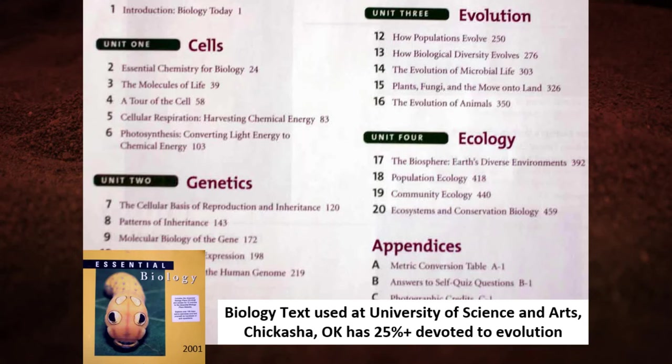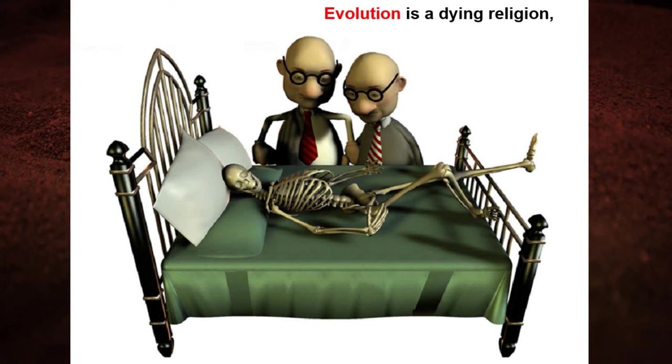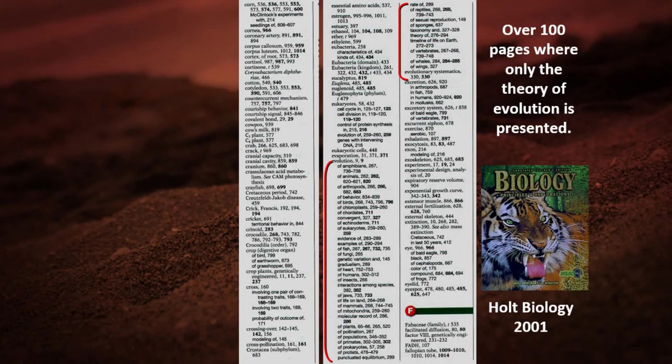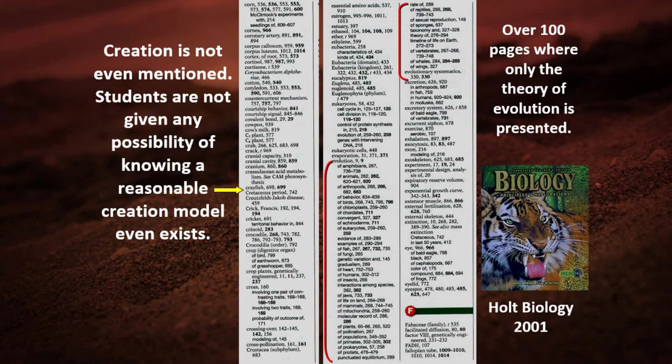A biology textbook used at the University of Science and Arts in Chickasaw, Oklahoma devotes 25% of its content to evolution. Evolution is basically a dying religion surviving on tax dollars. The book has over 100 pages where only the theory of evolution is presented; creation is not mentioned once, and students are given no possibility of knowing a reasonable creation model even exists.